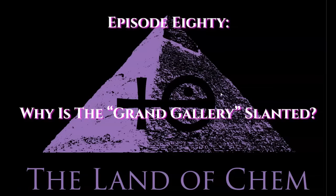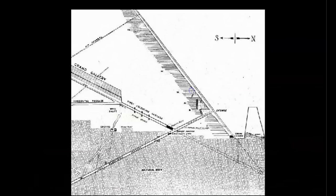Here we go with tonight's episode. In order to explain the function and configuration of the contact process chamber, we must first review the function of the subterranean chamber and the first step in the manufacturing cycle. The subterranean chamber is filled with water from the external reservoir, raising the water level inside the structure to the point where the well shaft meets the bottom of the contact process chamber.